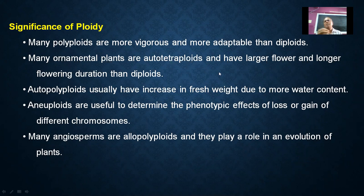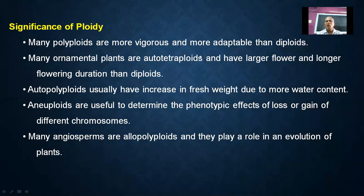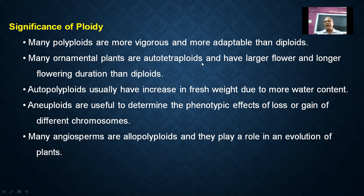Generally, diploid plants have two sets of chromosomes. Using colchicine, 2N becomes 4N — the chromosome number is doubled, producing autotetraploids with extended flowering duration.